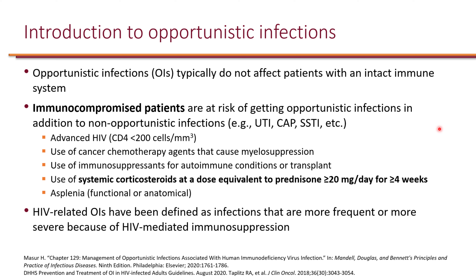Immunocompromised patients not only can get opportunistic infections, but they can also have non-opportunistic infections like other people — infections like UTIs, community-acquired pneumonia, skin and soft tissue infections, etc.